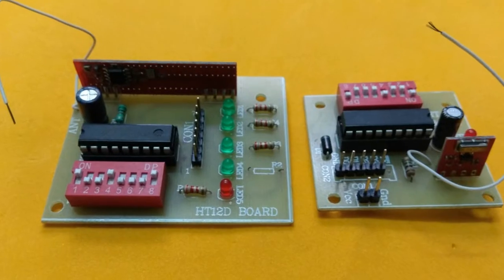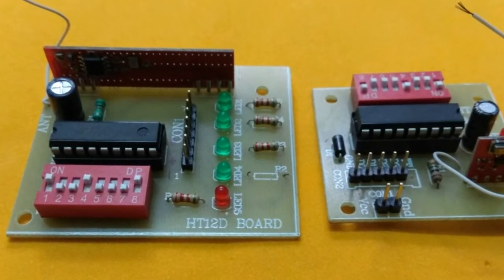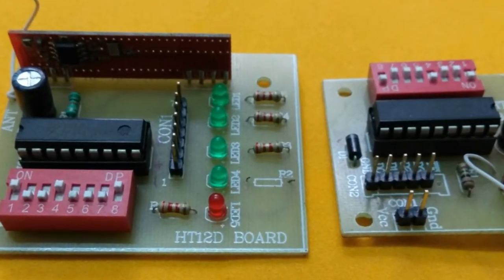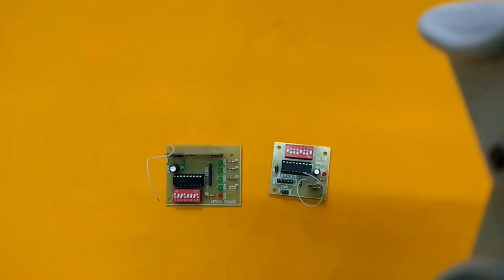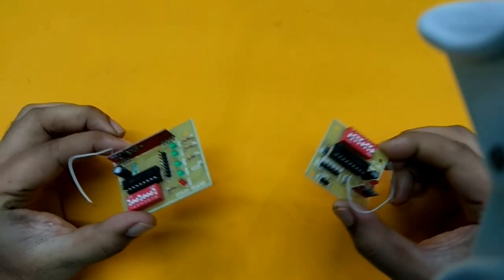Hi, this is Frank Donald from gadgetronics.com. In this video we're going to see the building and testing of an RF remote control using HD decoder and encoder chips and 433 megahertz transceivers. HD12D and HD12E are pretty famous decoder and encoder chips widely used in RF communication purposes.